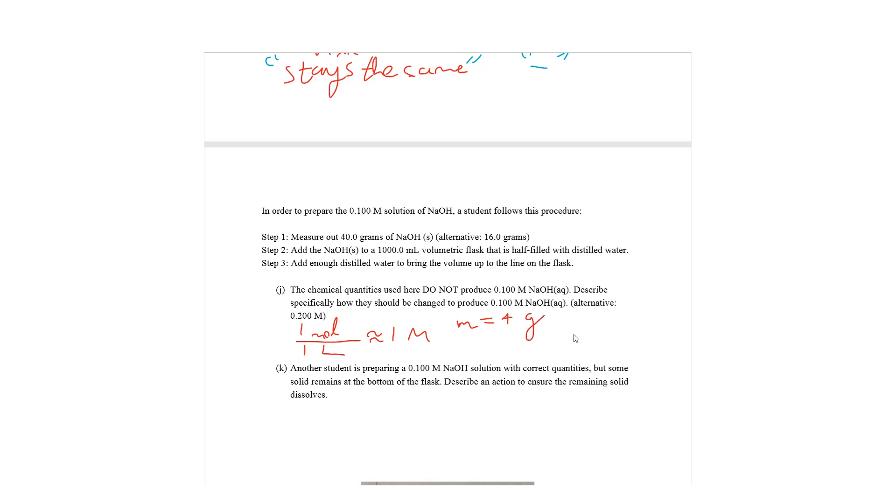And the whole process, the same process can be applied to the 16 grams alternative. Part K: Another student is preparing a 0.1 molar NaOH solution with correct quantities, but some solid remains at the bottom of the flask. Describe an action to ensure the remaining solid dissolves. So I'm sure a lot of people overthought this. Quite literally just stir it. Stirring until it dissolves. If you want to get more technical with it, what the stirring actually does is it releases the salt from adhesion to the side of the flask and exposes the salt in terms of surface area to the solvent more, which allows for solvation to be more kinetically favorable. But really, all you have to write is just stirring until dissolved.